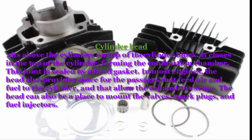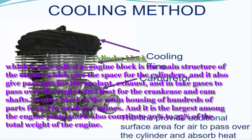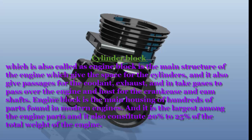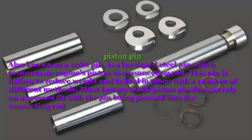Cylinder Block: Also called the engine block, it is the main structure of the engine, providing space for the cylinders and passages for the coolant, exhaust, and intake gases to pass through the engine, and hosting the crankcase and camshafts. The engine block is the main housing for hundreds of parts found in modern engines. It is the largest among the engine parts, constituting 20% to 25% of the total weight of the engine.